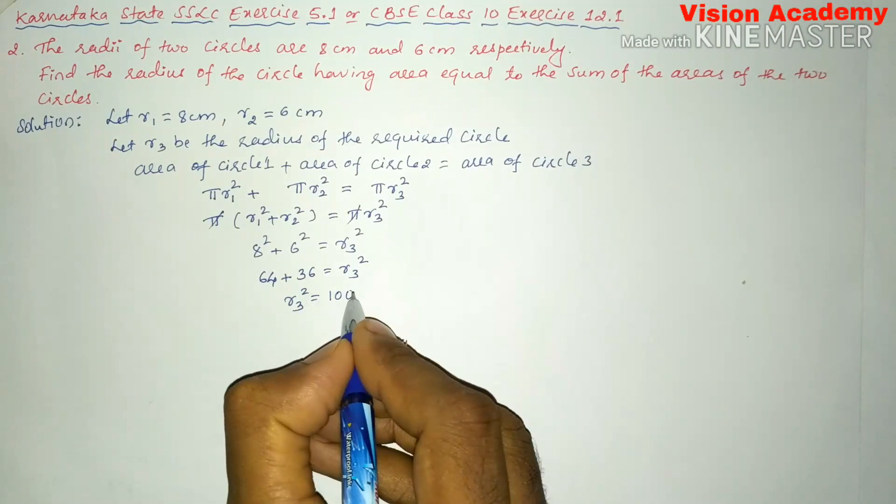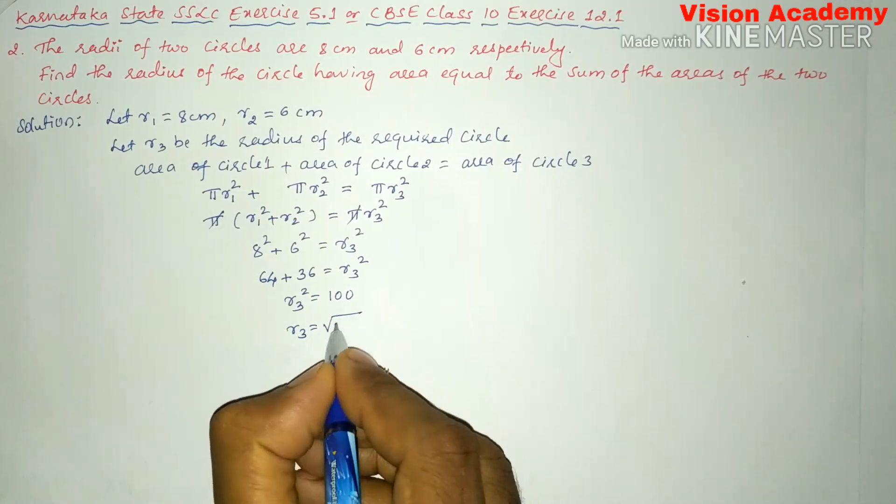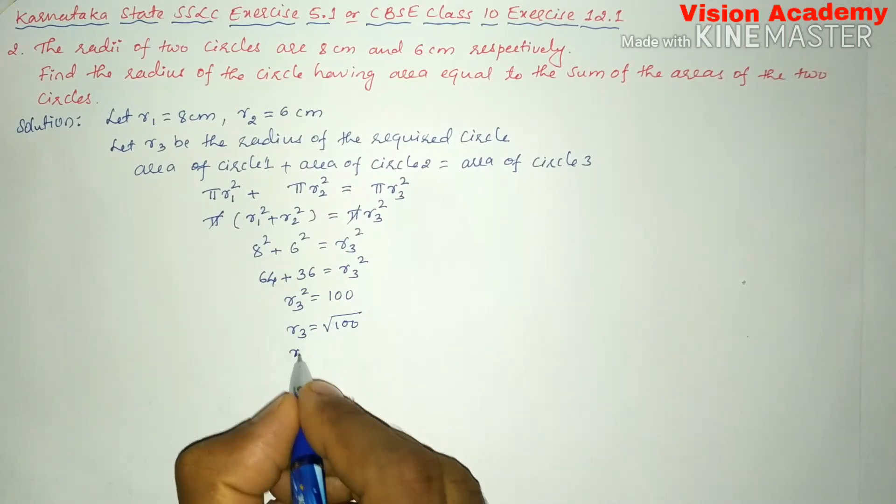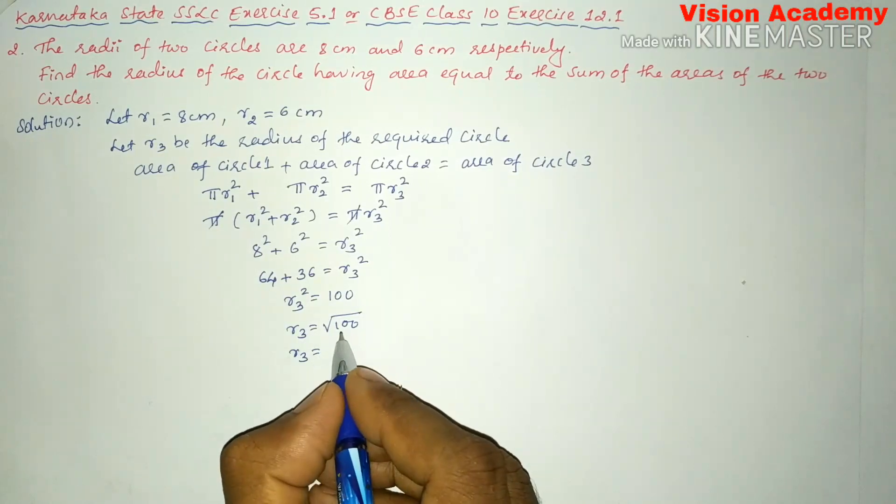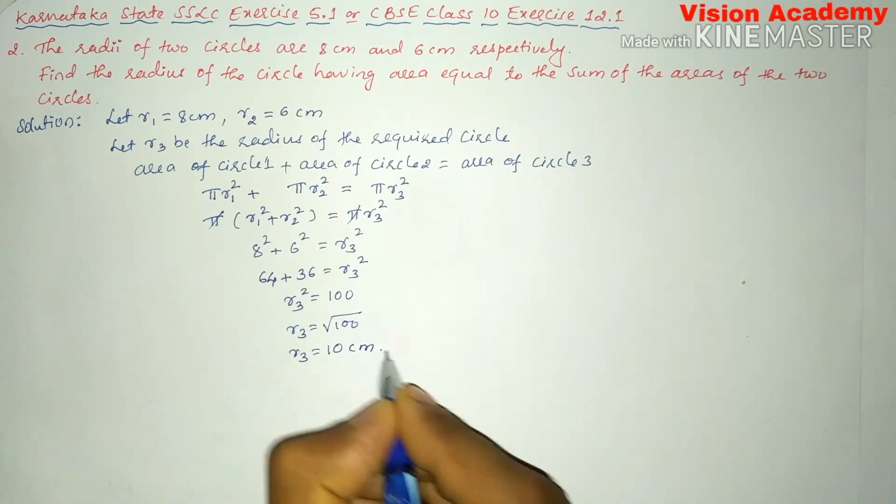Now transform this square from LHS to RHS, it will become square root. Here r3 equals square root of 100. r3 equals 100 is a perfect square of 10. So r3 equals 10 centimeter.